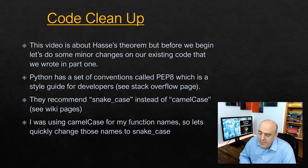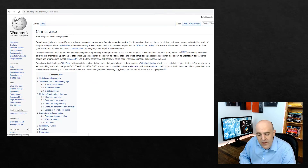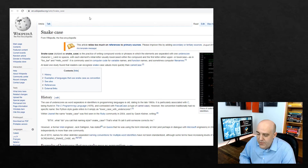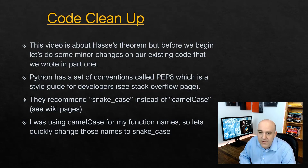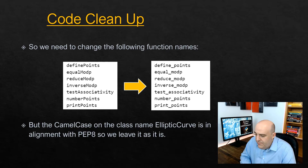Python has a set of style conventions called PEP8, and last time I was using CamelCase, but we should really be using SnakeCase. So I just want to make those changes — I'll do that off-camera because it's not too interesting. We're not changing any logic, just the names from CamelCase to SnakeCase. The class name EllipticCurve stays in CamelCase, as that's consistent with PEP8.